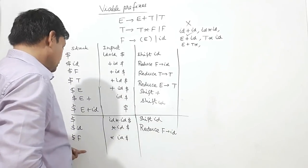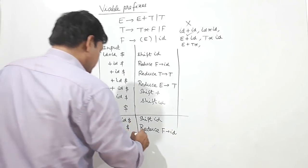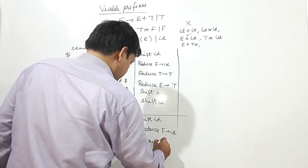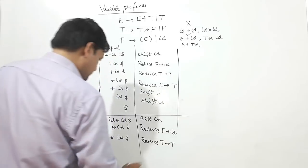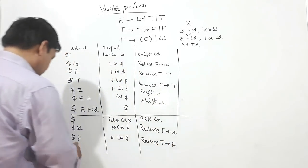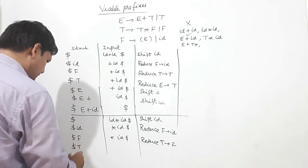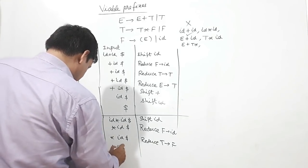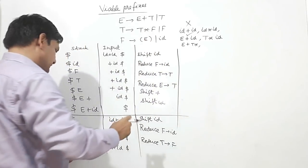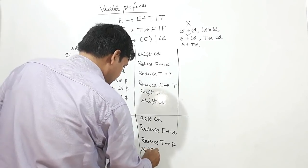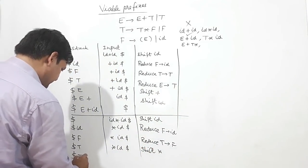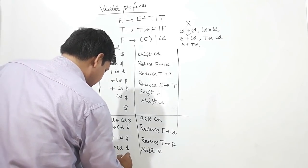So dollar F star ID dollar. F and star — there is no match of F and star, so I will reduce F by T. It becomes dollar T star ID dollar. Now T and star — it's a match, so shift star.